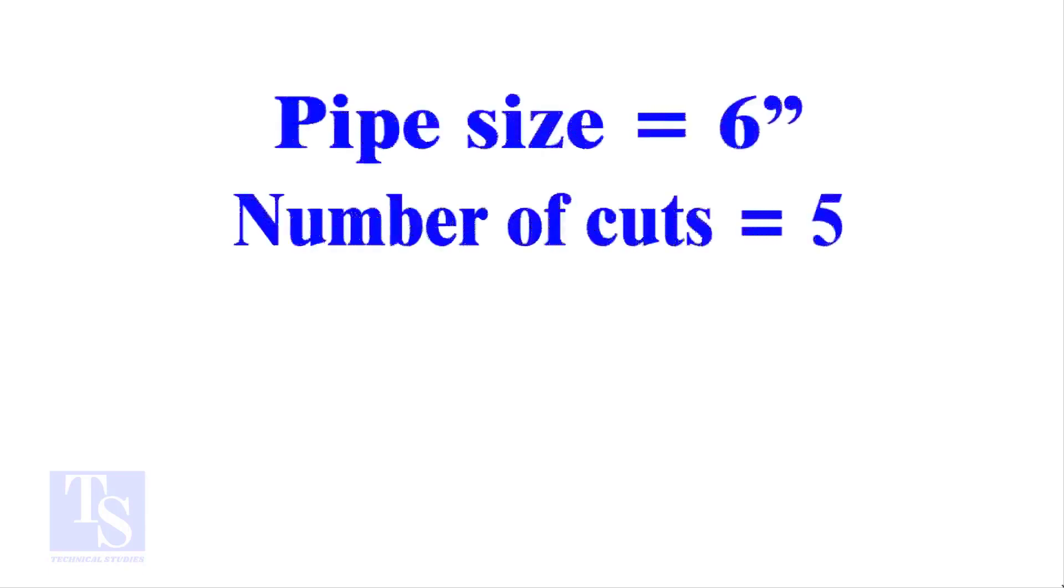Let me show you more examples. Pipe size 6 inches, number of cuts 5. And the answer is 13. Calculate the cutback in any method and compare it with this answer. Surprised?